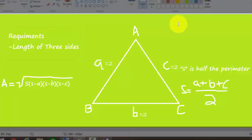I have assigned a equals 2, b equals 2, and c equals 2. There is a formula which we call Heron's formula in order to calculate the area.